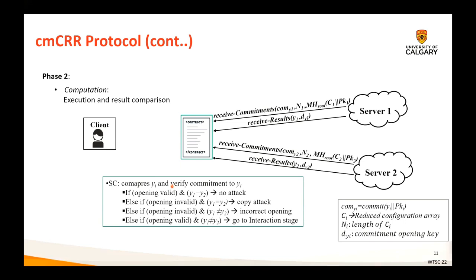There can be four possible scenarios while verifying the results by the smart contract. First, if both openings are valid and their results match, the result is considered as correct. Second, if one server's opening is invalid but their results match, the smart contract identifies this server as a copying server and the other server's result is correct. Third, if one server's opening is invalid and their results mismatch, the smart contract identifies this server as malicious and the other server as honest. Finally, if both openings are valid but their results mismatch, the smart contract initiates the dispute resolution phase.